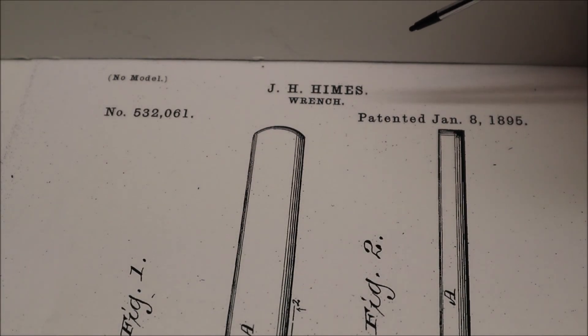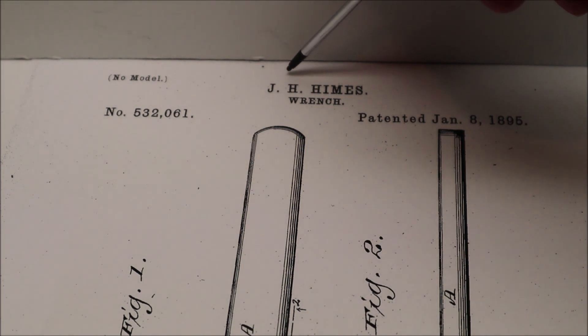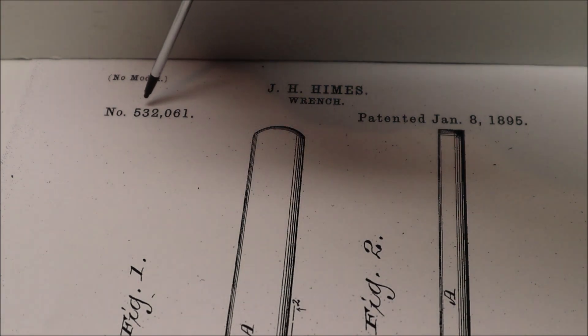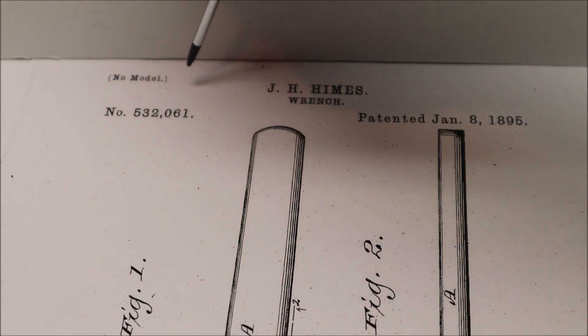This is a patent for a wrench invented by J.H. Himes. It was patented January 8, 1895. It's patent number 532061.